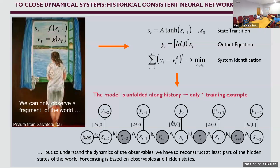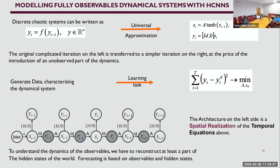An extraction matrix simply takes the first d components of the state vector. This simplifies the approach to physical systems and is consistent — we no longer have the issue of absent external signals during future modeling. The learning problem reduces to finding matrix A and the initial state vector S-naught that minimize the distance between what we observe and what we predict.